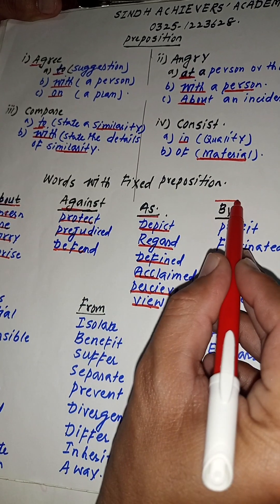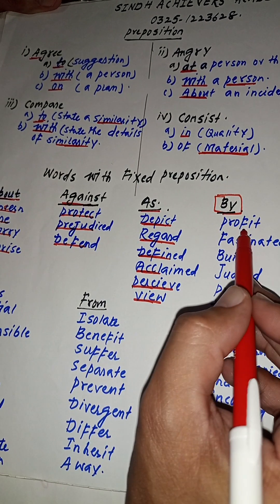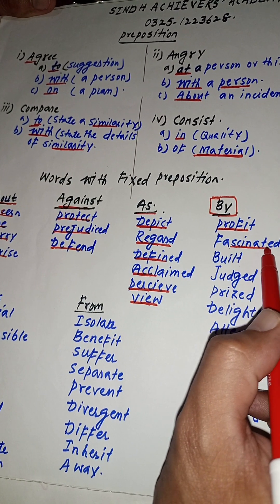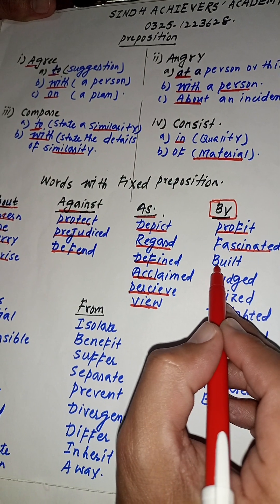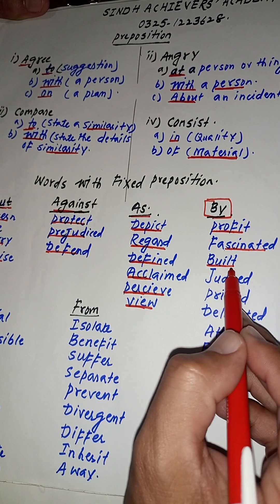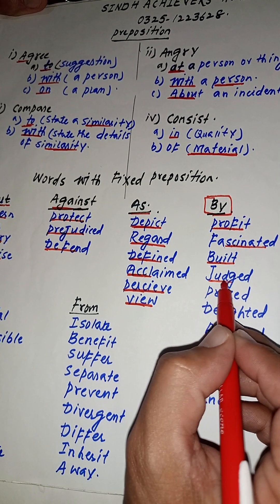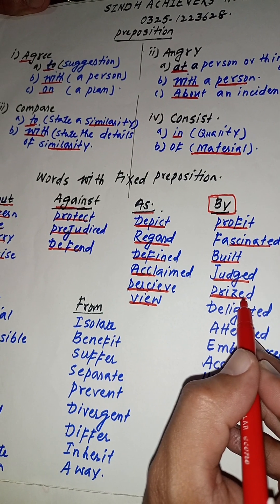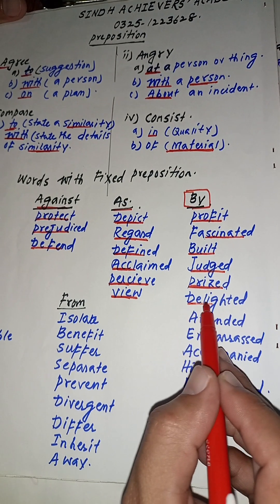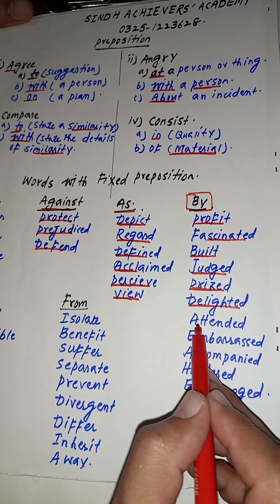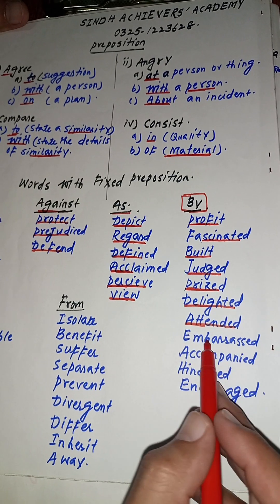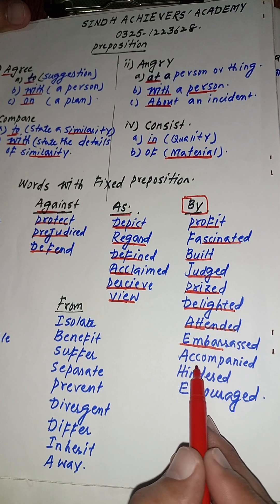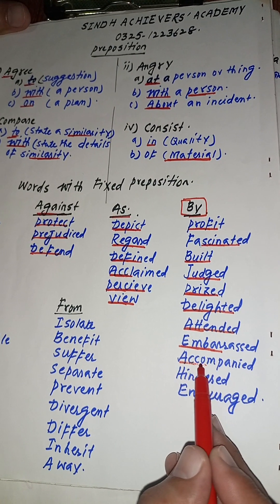We have the preposition BY. The following verbs take the preposition 'by': profit by, fascinated by, built by, judge by, priced by, delighted by, attended by, embossed by, and accompanied by.